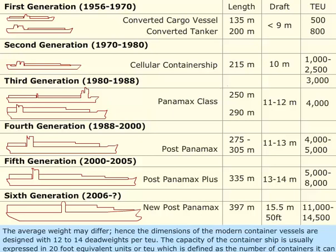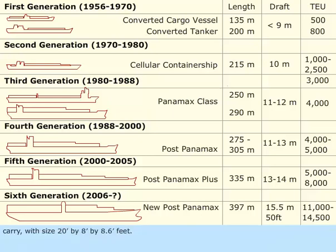Hence, the dimensions of modern container vessels are designed with 12 to 14 dead weights per TEU. The capacity of a container ship is usually expressed in 20-foot equivalent units, or TEU, which is defined as the number of containers it can carry with a size of 20 by 8 by 8.6 feet.